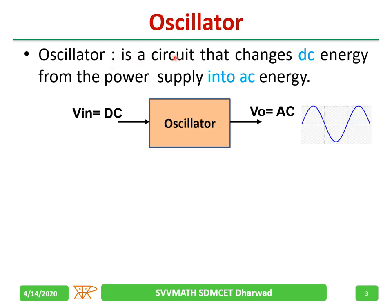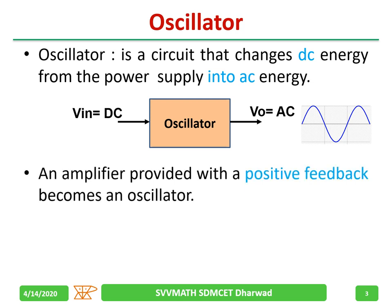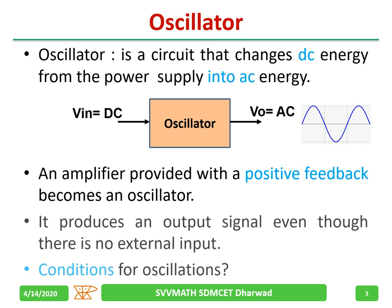An oscillator is a circuit that converts DC energy from the power supply into AC energy. We give an input as a DC voltage and the output we get is a waveform. An amplifier provided with positive feedback becomes an oscillator. It produces an output signal even though there is no external input.